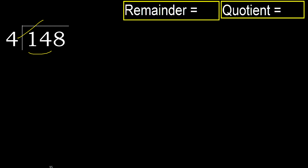But not greater. 4 multiplied by 4 is 16 — 16 is greater. 4 multiplied by 3 is 12 — 12 is not greater. So 14 minus 12 is 2.